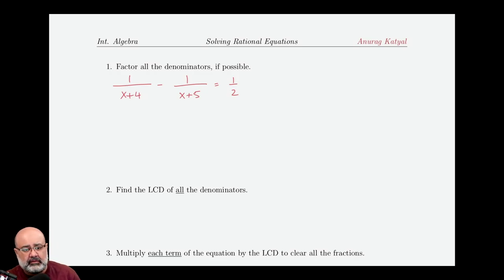This equation requires us to solve 1 over x plus 4 minus 1 over x plus 5 equals 1 over 2x.